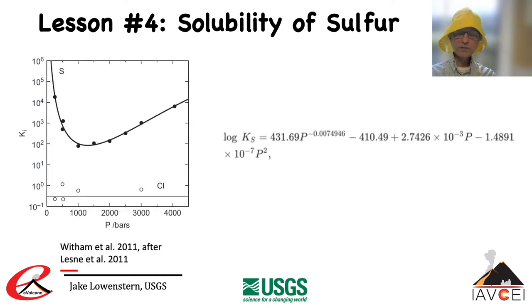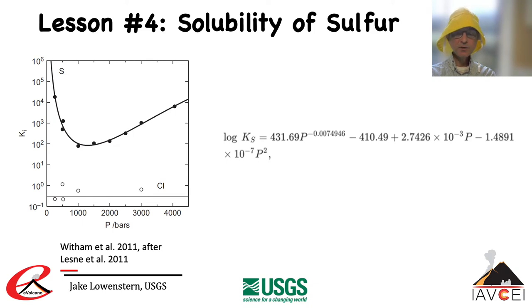Solex is a program that parameterizes sulfur based on a plot of K versus pressure. That plot is specific to a temperature of 1150°C, an oxidation state of about 1.5 to 2 log units above nickel-nickel oxide, and equilibrium with a specific melt composition as studied by Lesne et al. 2011. So the parameterization can be considered highly approximate for other compositions, temperatures, and oxygen fugacities. Be careful when using software that calculates vapor-melt partitioning for sulfur — you'll need to assess whether it's appropriate for the conditions of the magma you are modeling. This illustrates just how much experimental and theoretical work still needs to be done to adequately model sulfur behavior in magmas.